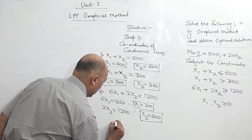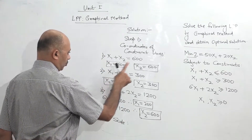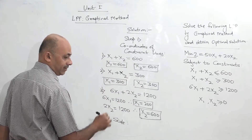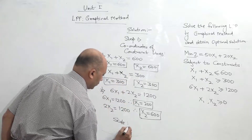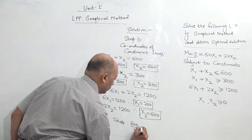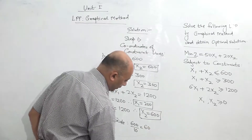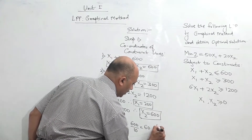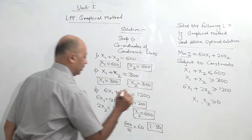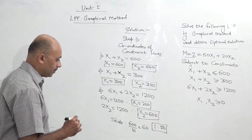Now to find the scale, take the highest coordinate out of all these and divide by 10 as a thumb rule. The highest coordinate is 600, so 600 divided by 10 is 60. You should take the scale as a round figure, so take scale 1 is to 50. Don't take a scale of 60 — 1 is to 50 is a better scale.